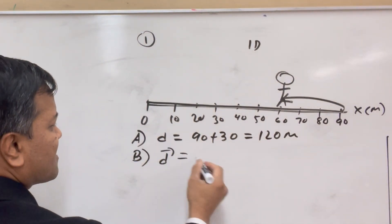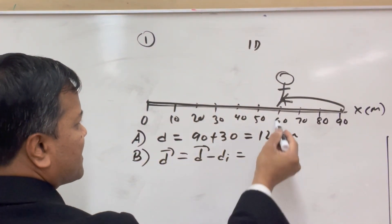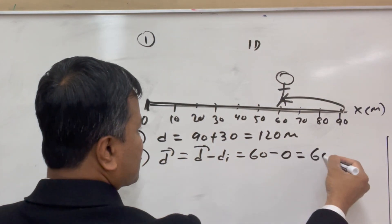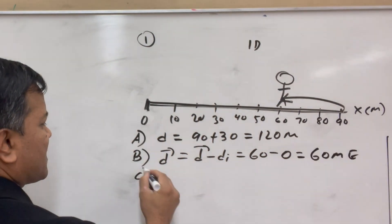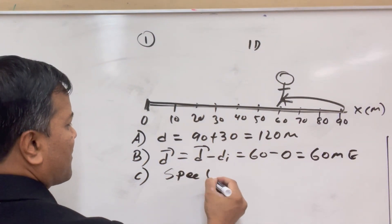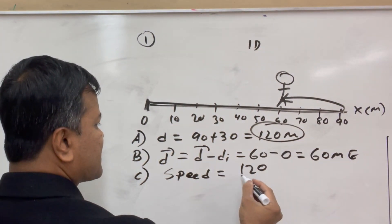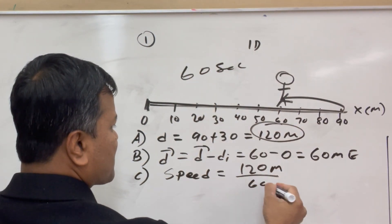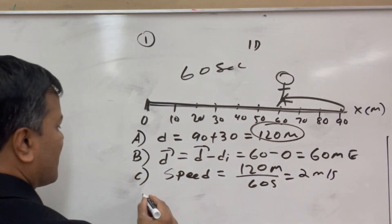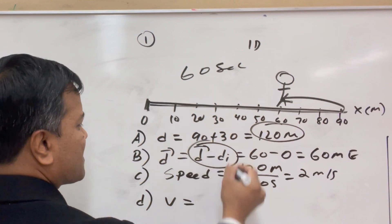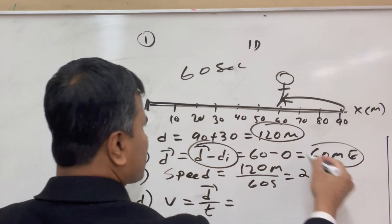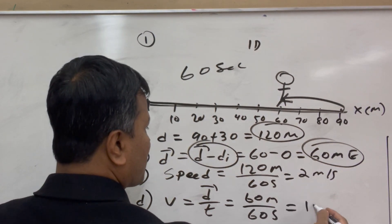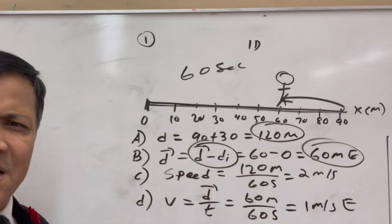B, displacement. Displacement is D_final minus D_initial, which is 60 meters minus 0 meters, which is 60 meters to the east. C, find the speed. Speed is distance over time. This entire trip took 60 seconds, so distance over time is 120 over 60, which is 2 meters per second. And finally, velocity is displacement over time: 60 meters over 60 seconds, so 1 meter per second to the east. Don't forget to include direction. That was problem number one.